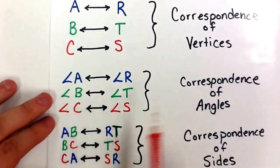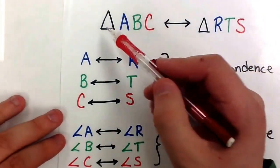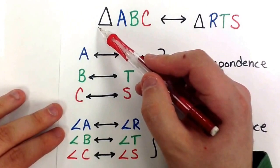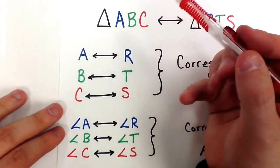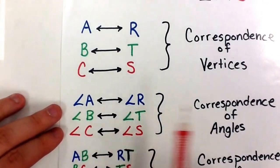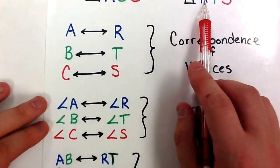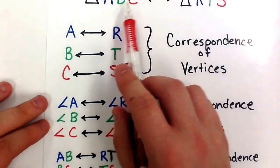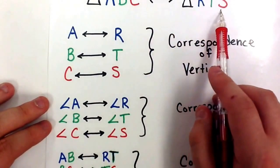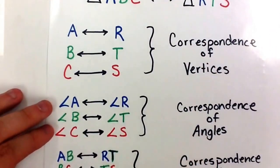When we look at angles, we're looking at the angles inside the triangle. We still refer to them by the letter of the vertex point. So angle A corresponds to angle R, angle B corresponds to angle T, and angle C corresponds to angle S. This is the correspondence of angles.